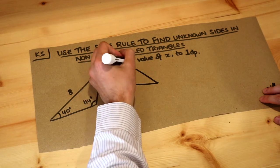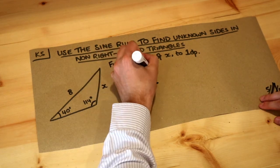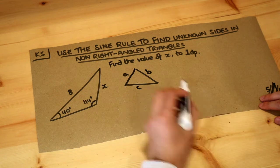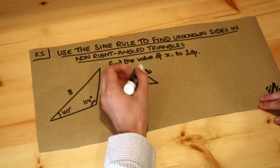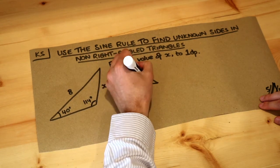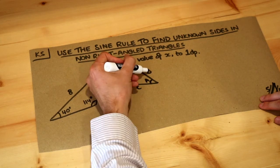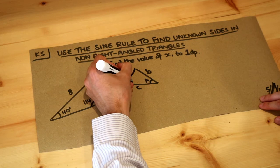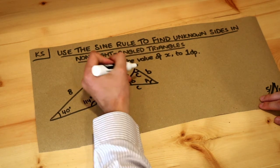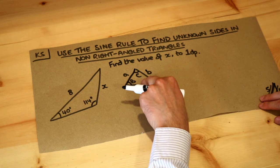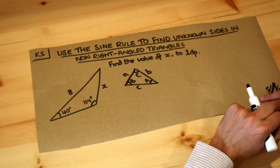Let's say we label the three sides of the triangle A, B, and C using lowercase letters. Then each side's opposite angle would be the capital form of that letter. So opposite A would be angle capital A, opposite B would be angle capital B, and opposite C would be capital C. That's how we label a non-right-angled triangle.